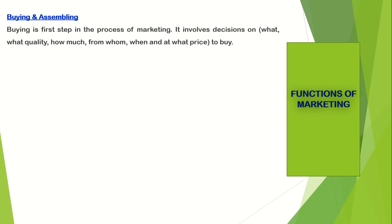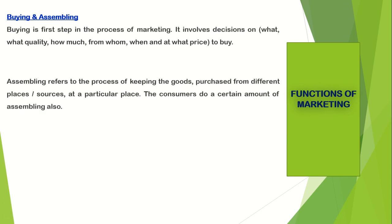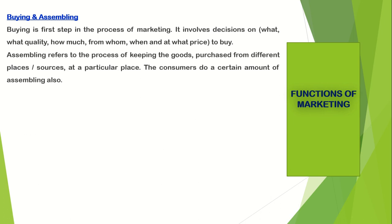Now let's have a look at the first function: buying and assembling. Buying is the first step in the process of marketing. It involves decisions on what to buy, what quality, how much, from whom, when, and at what price to buy the products. Assembling refers to the process of keeping the goods purchased from different places or sources at a particular place — mobilizing all that a marketer or company has purchased at one place.